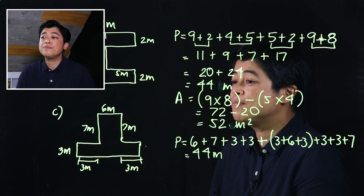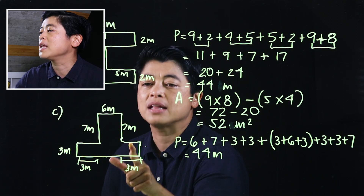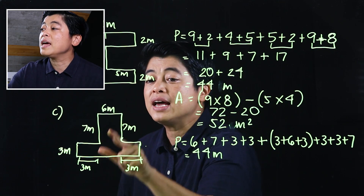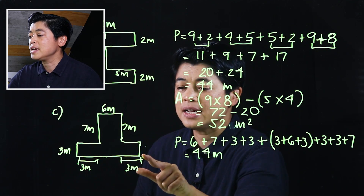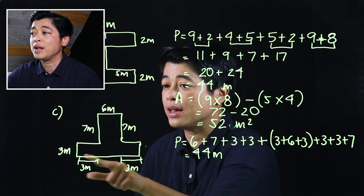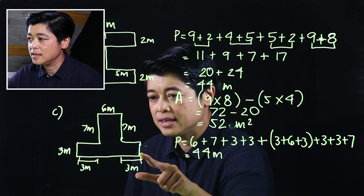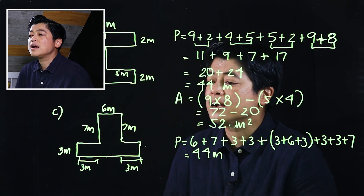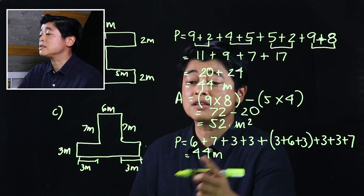An easier version: if I move this segment up to the top and that segment up to the top, it's technically a full rectangle with an extra 7 and 7. So the bottom is 3 plus 3 equals 6, plus 6 equals 12, meaning the top is also 12, the sides are 10 and 10, plus the extra 7 and 7. In total, that's still 44.